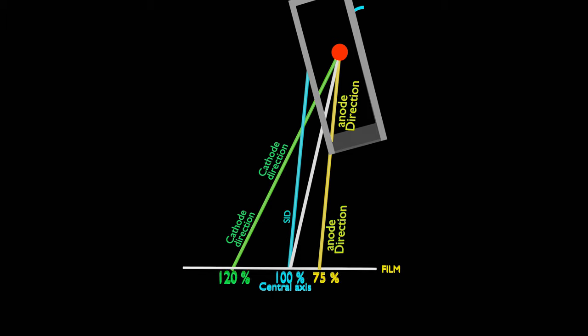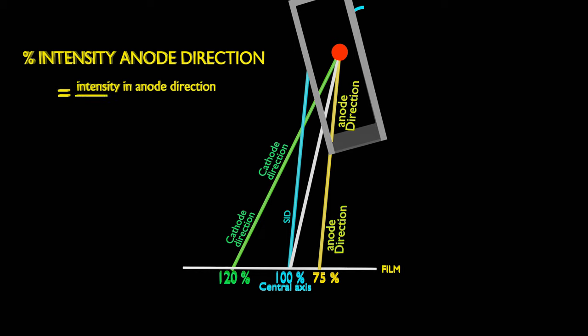Keeping this in mind, let's understand how it affects relative intensity. Relative intensity in anode direction equals intensity in anode direction divided by intensity in central axis.